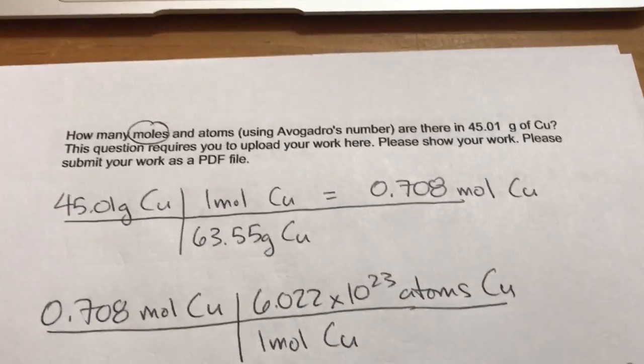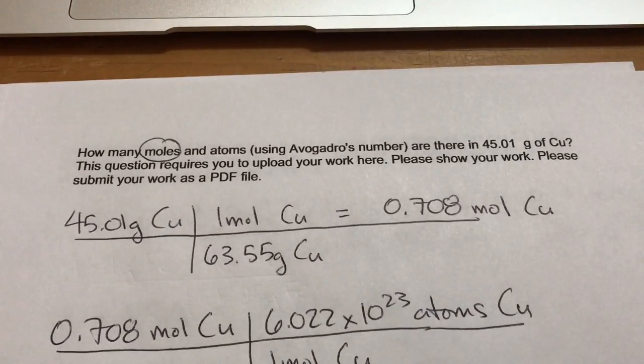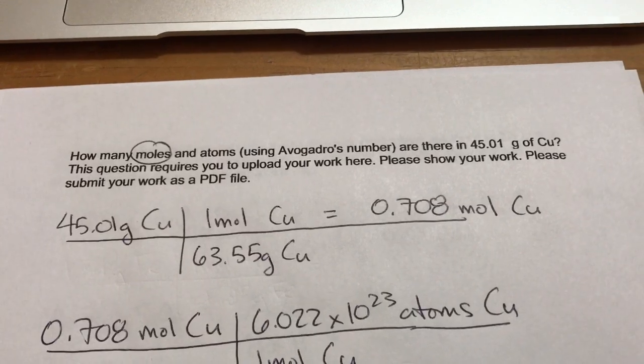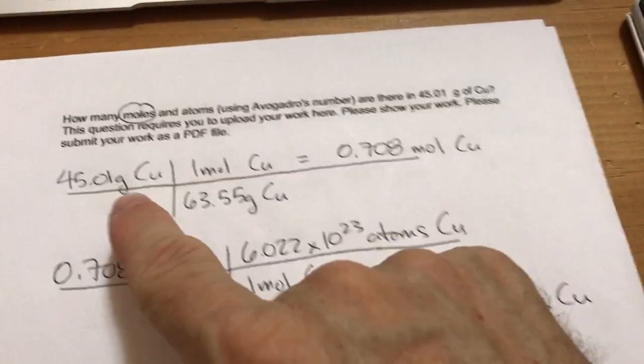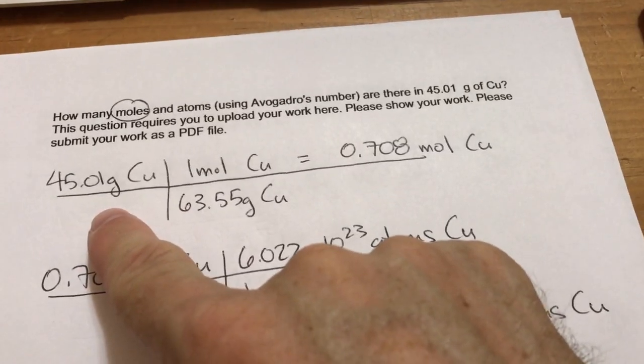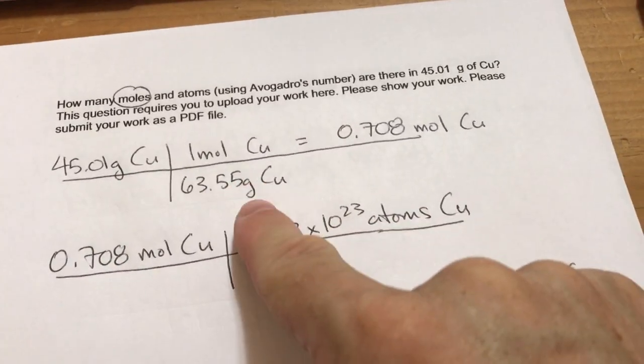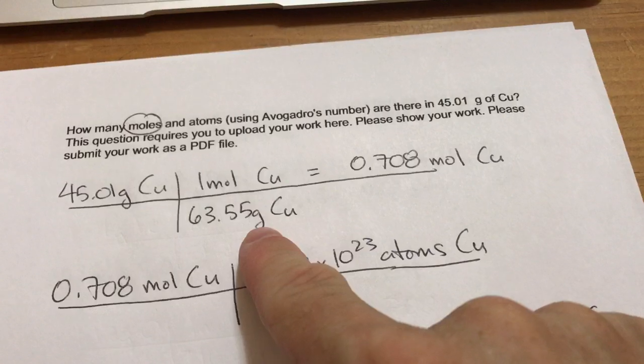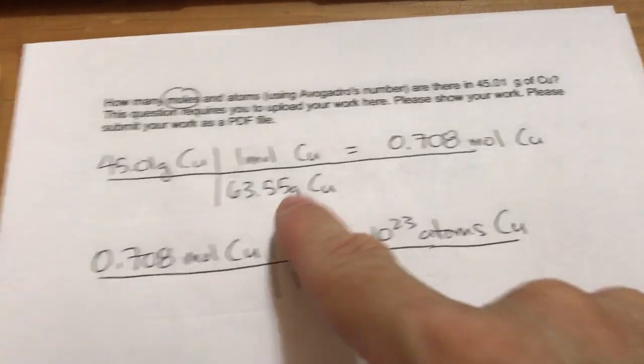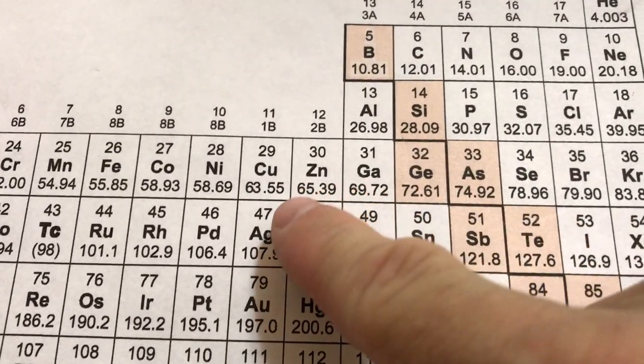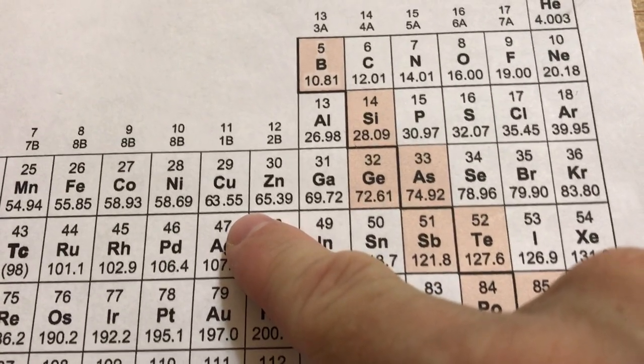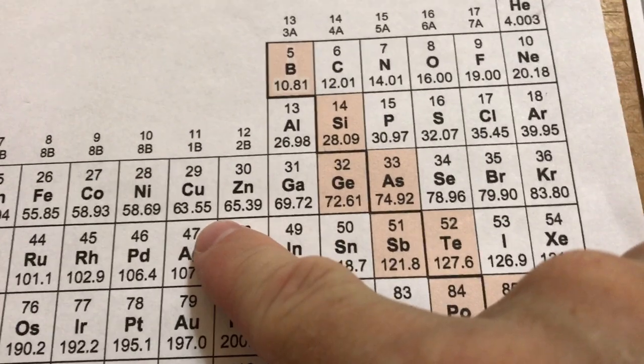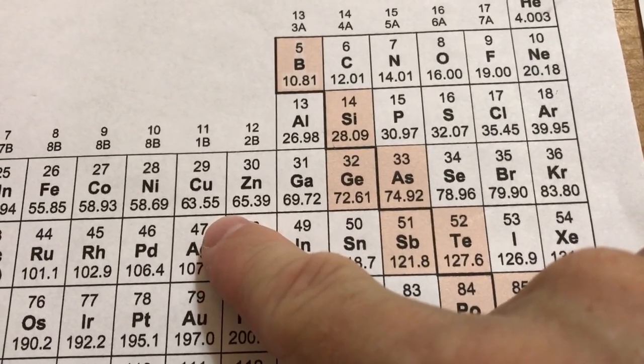How many moles and atoms using Avogadro's number are there in 45.01 grams of copper? My setup here starts with the 45.01 grams of copper, uses the molar mass of copper, 63.55, and we go over to the periodic table. The number under copper on the periodic table is the molar mass in grams of copper, so that's where we get it.